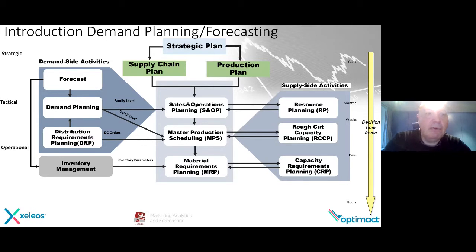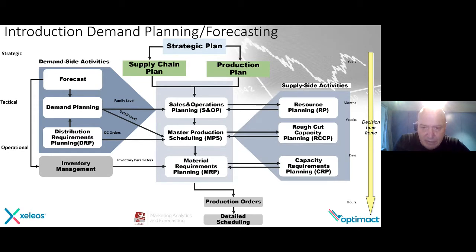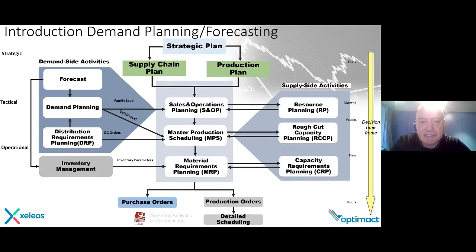Inventory management is also an input for material requirements planning. On a very operational level, on the right side, you also have capacity requirements planning. As a result of material requirements planning, you have your production orders, which are the basis for detailed scheduling — the planning of production orders into your capacity and resources — and also the basis of purchase orders. By showing this picture, I hope you understand that demand planning and forecast is a very important input for your entire supply chain planning.